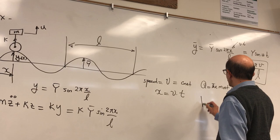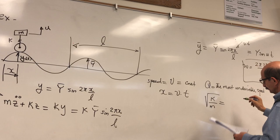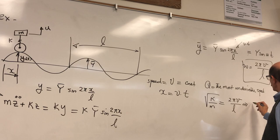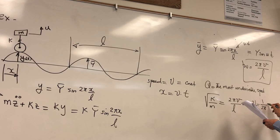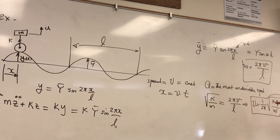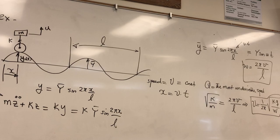Setting omega = omega_n: 2πv/L = sqrt(k/m). Solving for the critical speed v = (L/2π)·sqrt(k/m), or written in terms of car weight W: v = (L/2π)·sqrt(k·g/W). If you know the road wavelength, tire/suspension stiffness, and car weight, you can estimate the speed at which resonance causes maximum discomfort — and avoid traveling at that speed.